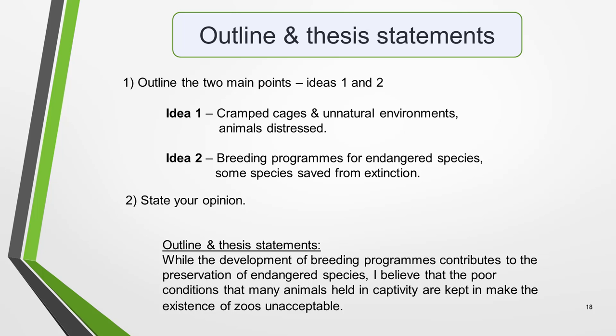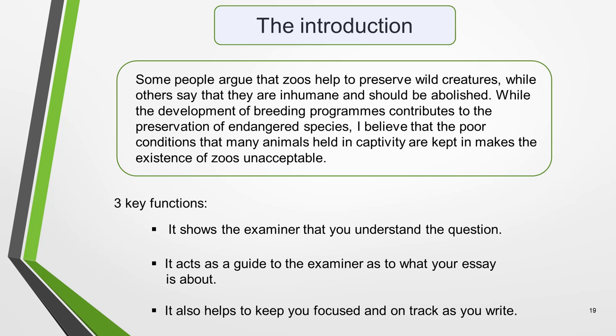Here's the combined outline and thesis sentence: 'While the development of breeding programs contributes to the preservation of endangered species, I believe that the poor conditions that many animals held in captivity are kept in make the existence of zoos unacceptable.' Bringing all three elements together, the full introduction reads: 'Some people argue that zoos help to preserve wild creatures, while others say that they are inhumane and should be abolished. While the development of breeding programs contributes to the preservation of endangered species, I believe that the poor conditions that many animals held in captivity are kept in makes the existence of zoos unacceptable.'